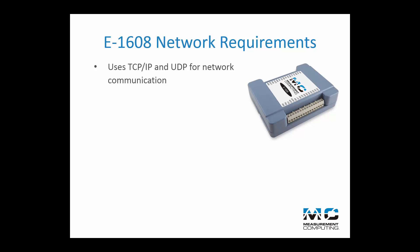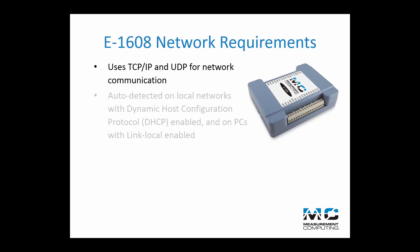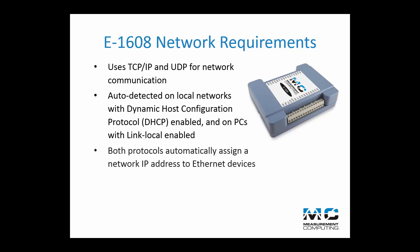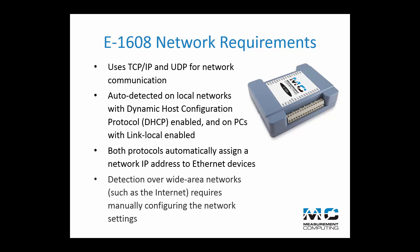The E1608 uses TCP/IP and UDP for network communication. The device gets auto-detected on local networks with dynamic host configuration protocol enabled, and on PCs with link local enabled. These protocols automatically assign a network IP address to Ethernet devices. Device detection over wide area networks, such as the Internet, requires manual configuration of the IP address and other network settings.